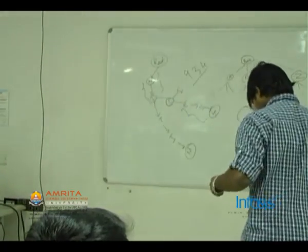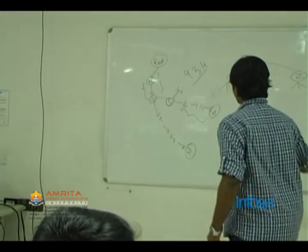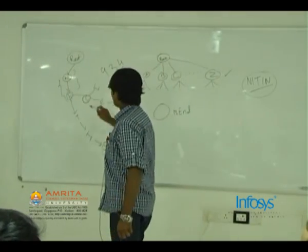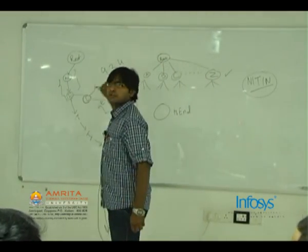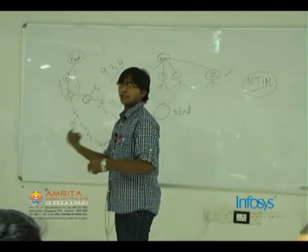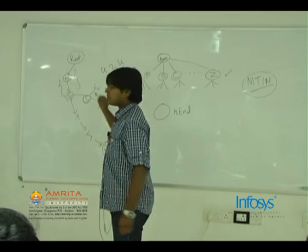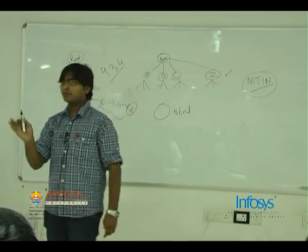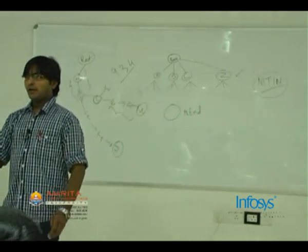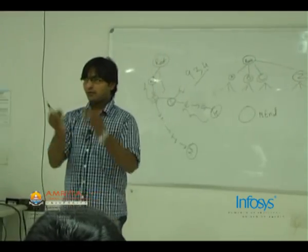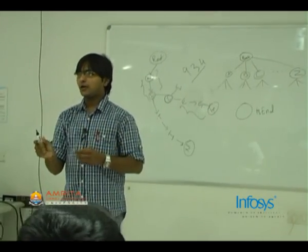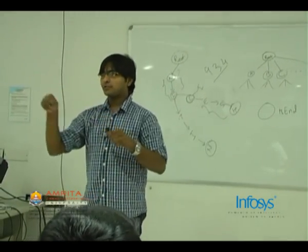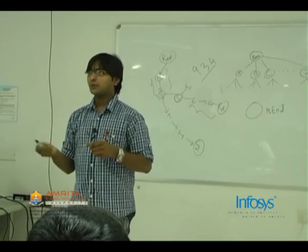When you are inserting a word into the trie, you will be creating nodes. When creating a node, we initialize it to zero, and when the last letter of that word comes, we mark that node as one.